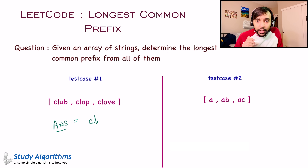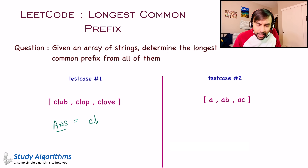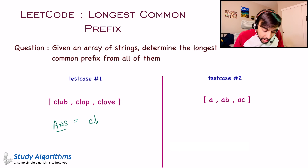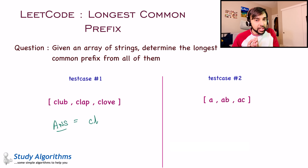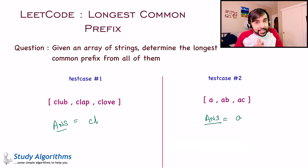Similarly, let us look at test case number two. We have three strings again and this time these strings are pretty small. Your prefix could be as short as even one letter. If you look closely, you can find A as a prefix and it occurs in all three strings. And hence, for test case number two, my answer would be just a single letter: A. That is the longest common prefix you can find.